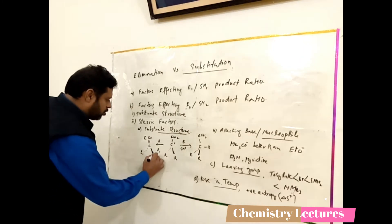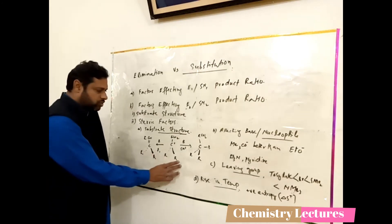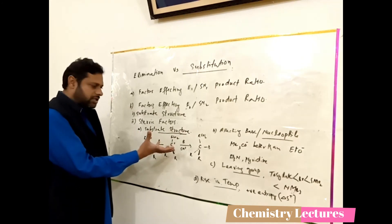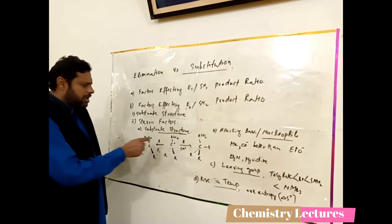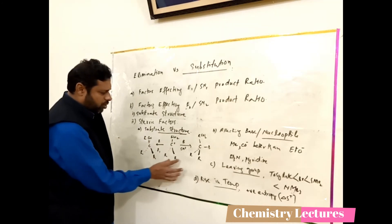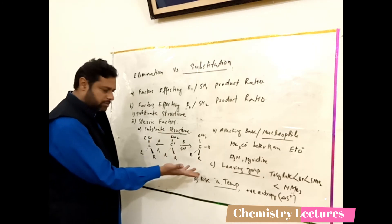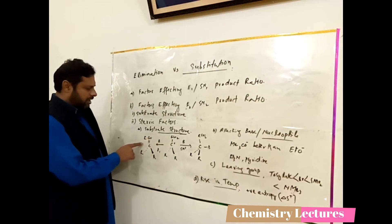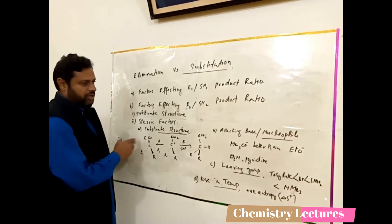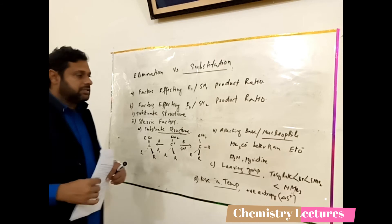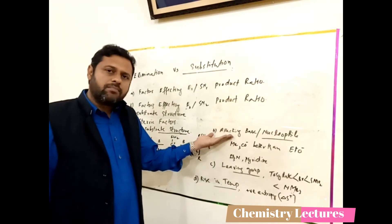When more branched, bulky R groups are used on the carbon from which the leaving group departs, steric hindrance increases and elimination is favored. The second steric factor is the attacking base or nucleophile: if you use a more bulky, branched attacking base, this favors elimination, because the bulky base cannot approach the carbon to act as a nucleophile.